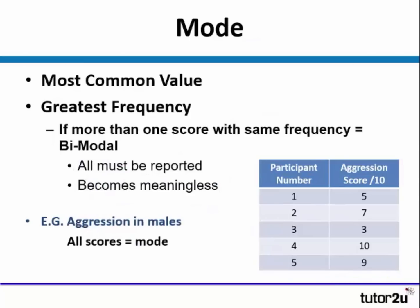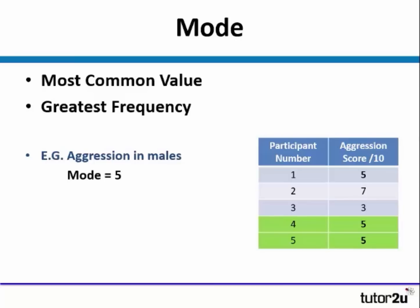The final measure of central tendency is mode, and this is the most common value. We're looking for the score in the table with the greatest frequency. If we have more than one score with the same frequency, it would be called a bimodal score, and we'd have to report them all — making the data actually meaningless. In the example table, all scores appear once. If we edit the data so that we now have three scores of five, this becomes the mode.